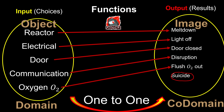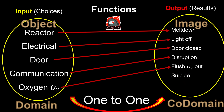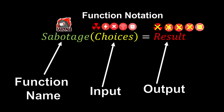Object and image are just the individual choices or results. Now, what if I add one more possible result — suicide — but as we know, it's impossible for an imposter to suicide, so this is not linked up by any element in the domain. We say this is out of range. Whoever is paired up and linked will be in the range. Since it's a set, the range is the set that consists of meltdown, light off, door close, disruption, and flush. Whoever has no partner is out of range and not included in the set.